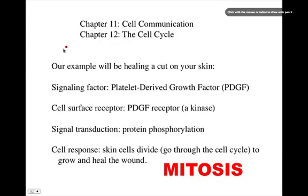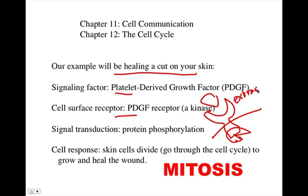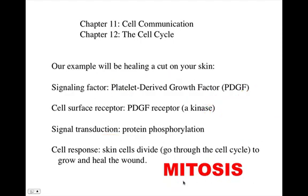Here's more of the biology of our specific example: healing a cut under your skin, under a scab. The signaling factor PDGF and the cell surface receptor, the PDGF receptor, are two proteins with specific three-dimensional tertiary structures. The extracellular domain of the receptor has a binding site for PDGF, and the cytoplasmic domain is involved in signal transduction — specifically protein phosphorylation — which stimulates the target skin cells, epidermal cells, to go through the cell cycle faster, through mitosis, and divide to heal the wound.